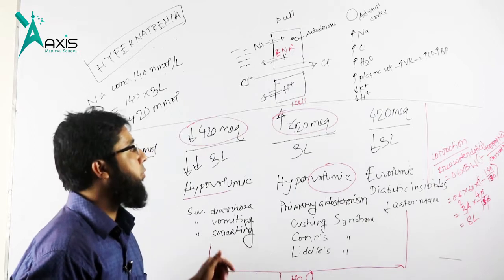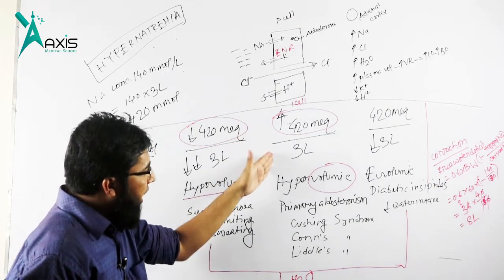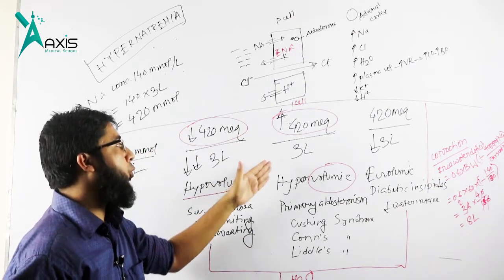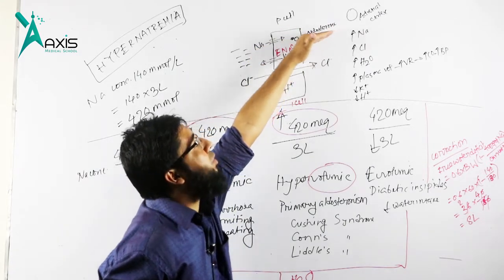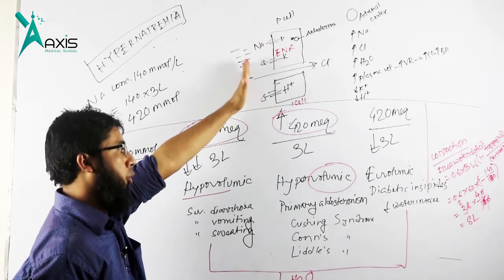5% dextrose in aqua. And for hypervolemic correction, we have to block this mechanism.